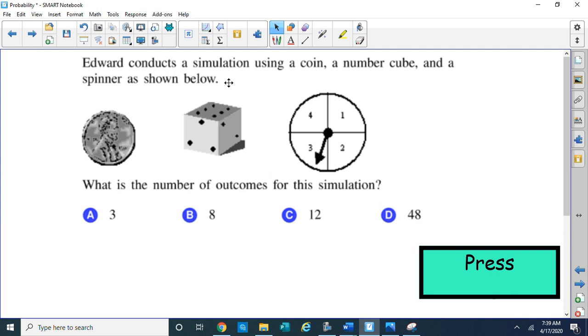Edward conducts a simulation using a coin, a number cube, and a spinner, as shown below. All right, so there's his penny, there's his dice cube, and there's his spinner, 1, 2, 3, 4, on the spinner. What is the number of outcomes for this simulation? So they want to know about outcomes, or we call it sample space. So he has a lot of different outcomes that could occur when you do these activities together. So let's take a look at these different activities.